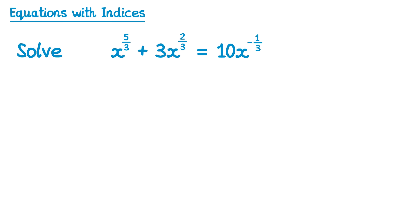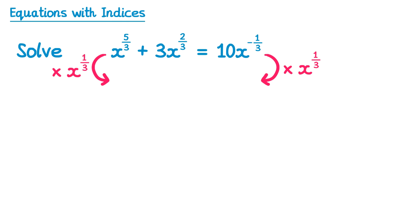Now we have another question, a bit similar to the last one. This time we're going to multiply by x to the power one third instead of x to the power one half. If you look at all of the indices in the question, you can see the denominator is always 3, and that's a big giveaway to what you need to multiply by. So if we start with x to the power 5 over 3 times x to the one third, we do 5 over 3 plus one third, which is 6 over 3. Moving on, we've got 3x to the power two thirds, and we multiply this by x to the one third, so we add two thirds and one third to get 3x to the power 3 over 3.